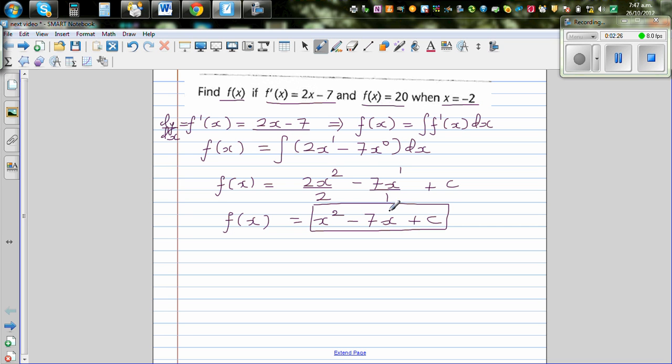And if you differentiate minus 7x, you get minus 7, and if you differentiate a constant you get 0. So basically can you see if you differentiate this, f'(x) would be 2x minus 7.